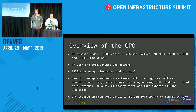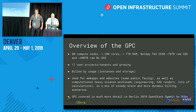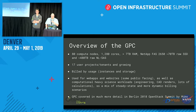A quick overview of the Goddard private cloud that we run: 80 compute nodes, about 1300 cores, 7 terabytes of RAM, and our storage is running on a NetApp FAS 2650 with about 70 terabytes raw SSD and about 480 terabytes raw nearline SAS. We have 17 user projects and growing, and our billing is based on usage, which makes it tricky because we have different use cases.